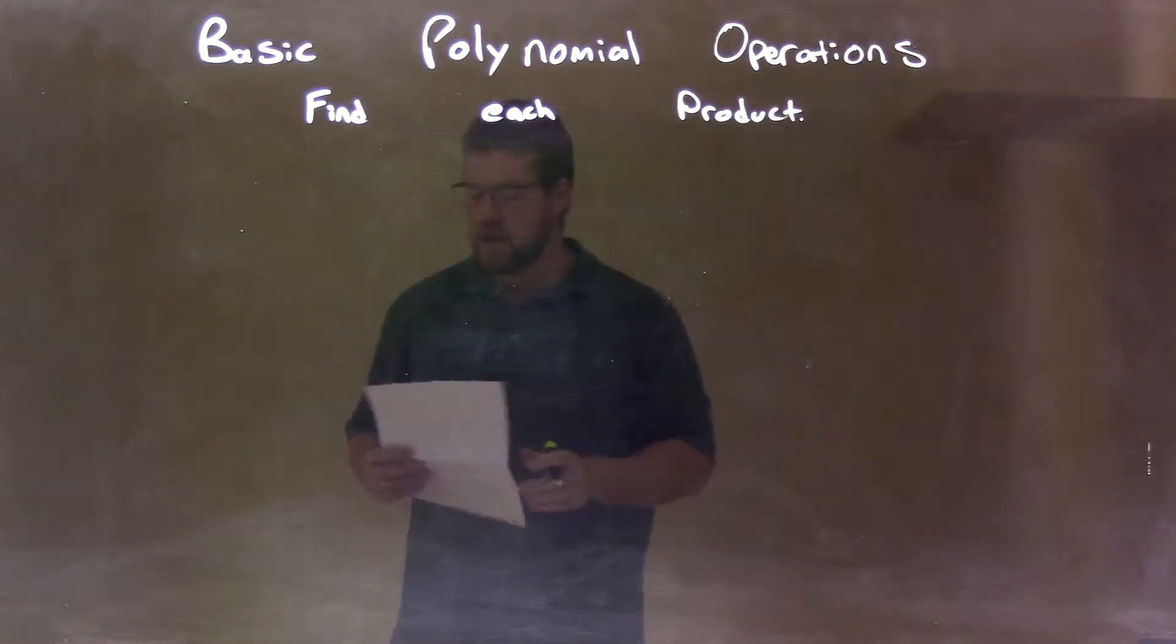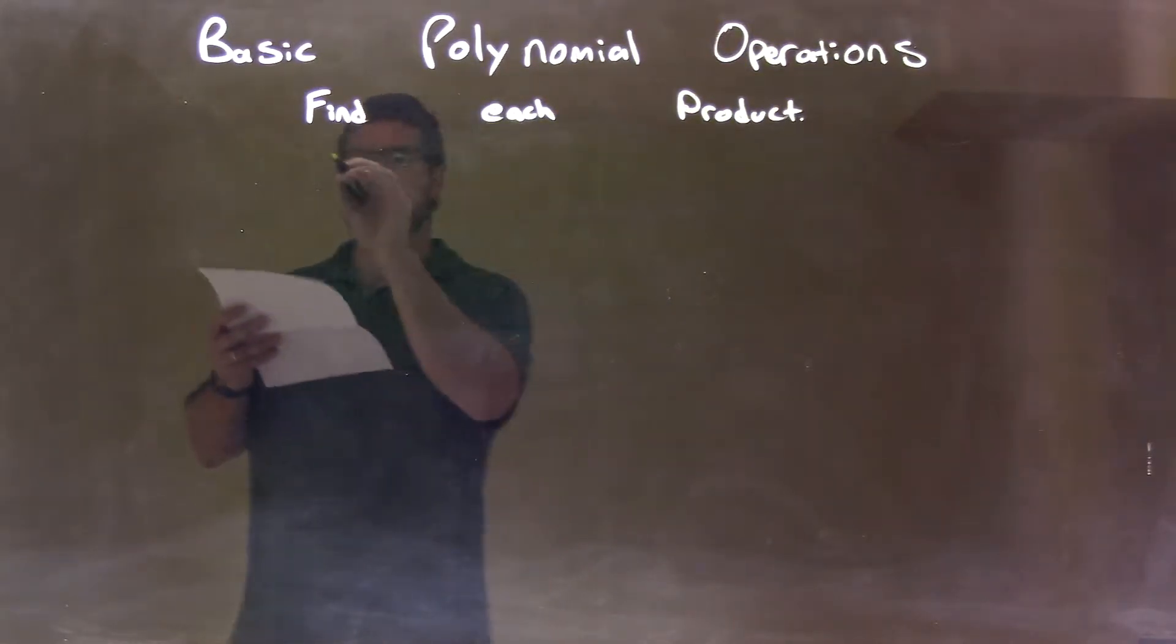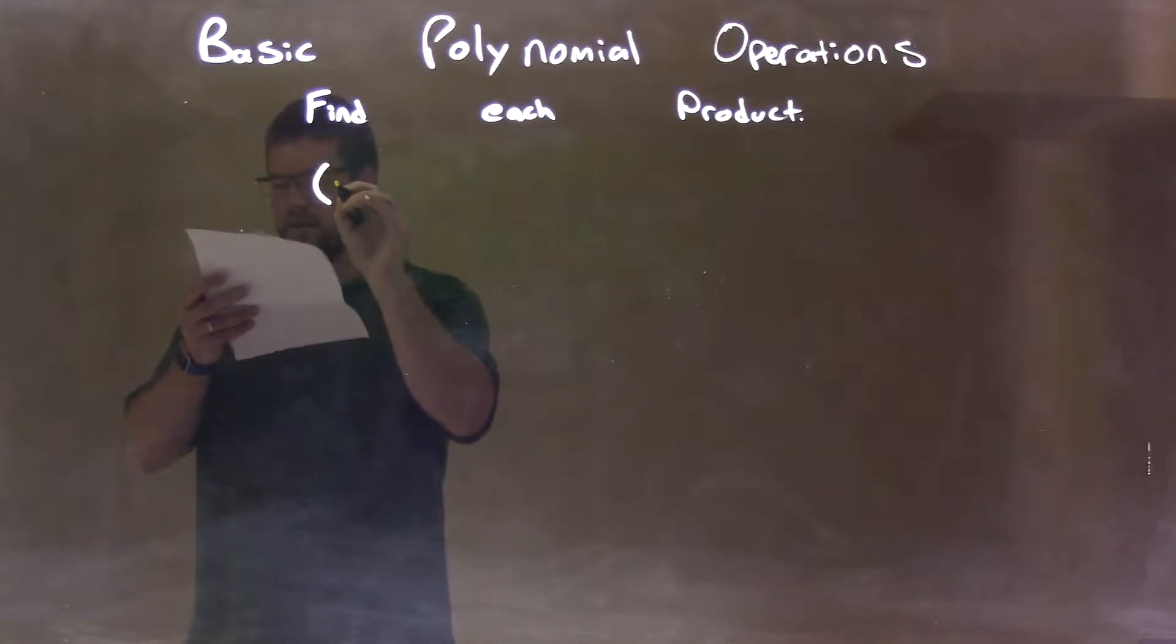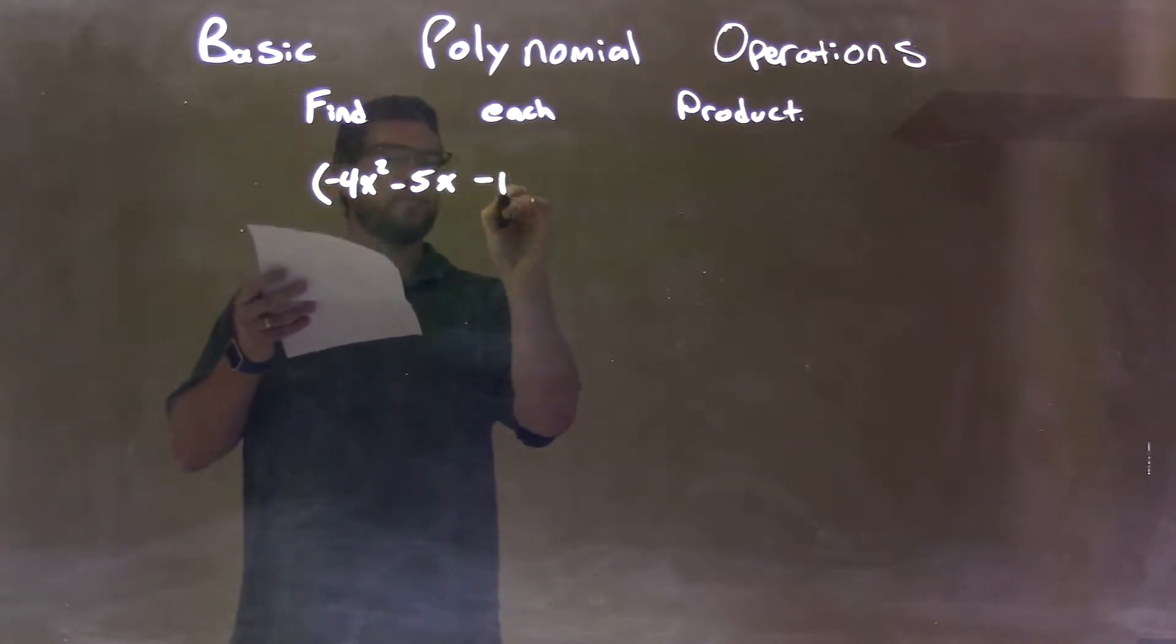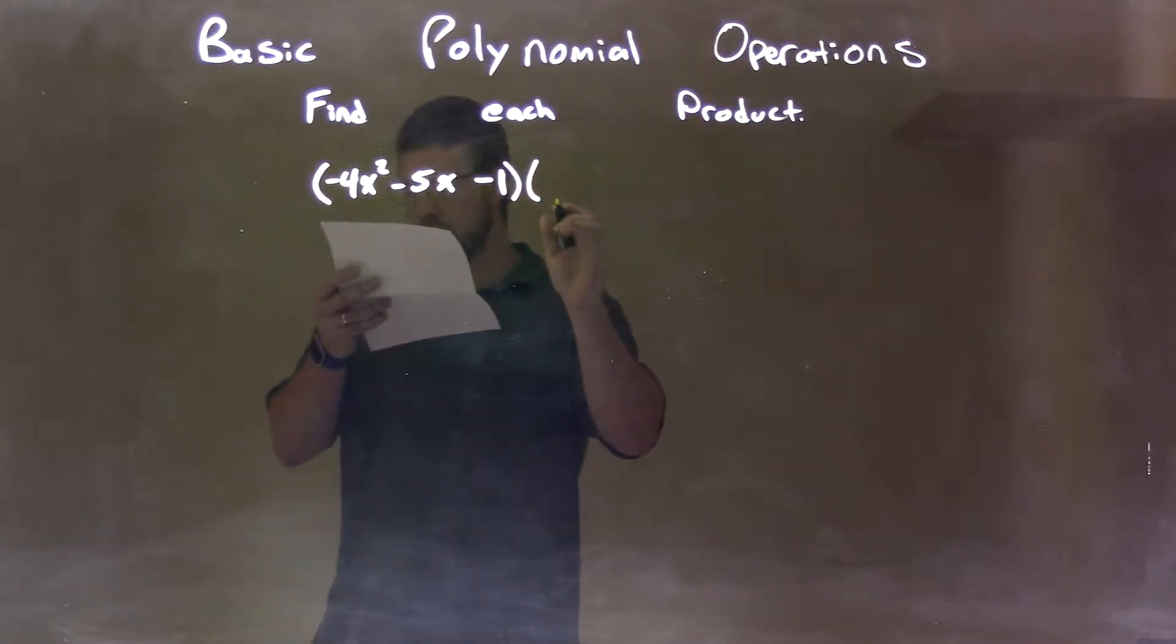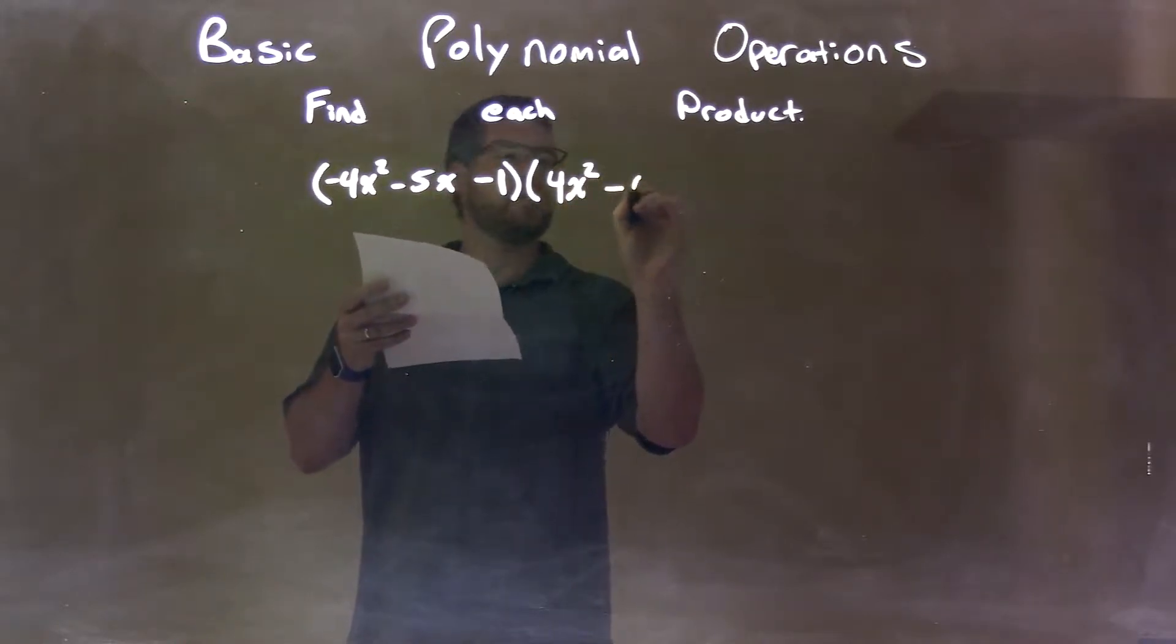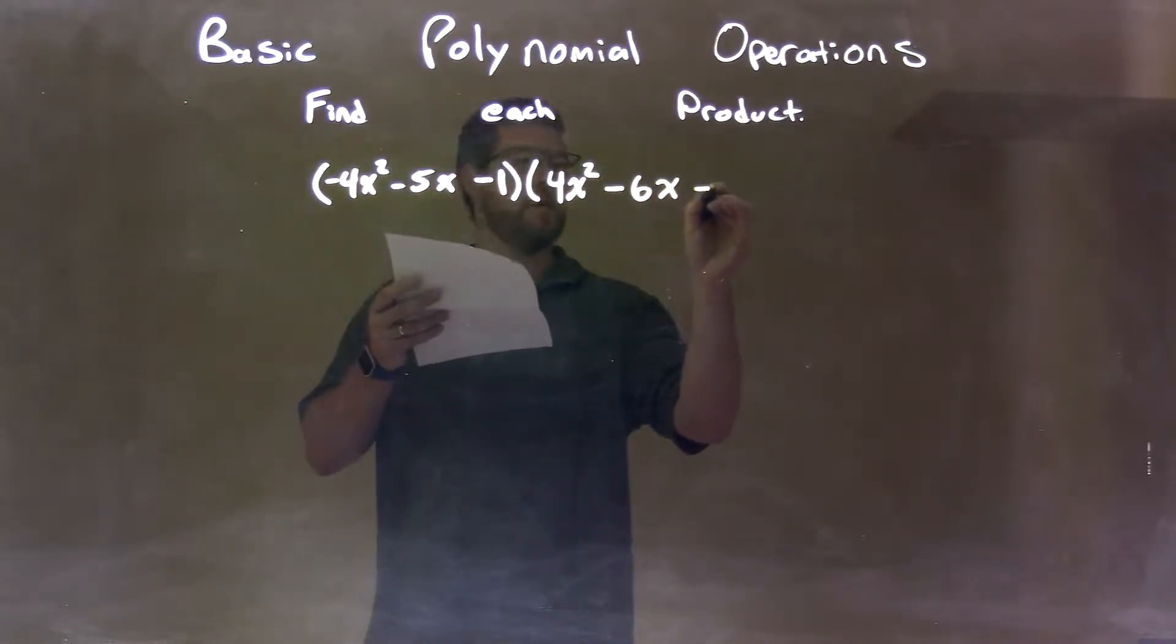We're going to find each product. So if I was given this product, we have negative 4x squared minus 5x minus 1 times 4x squared minus 6x minus 2.